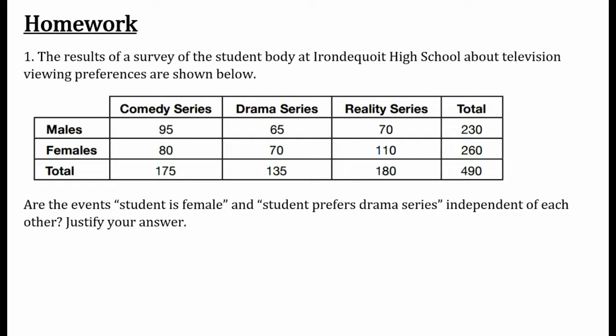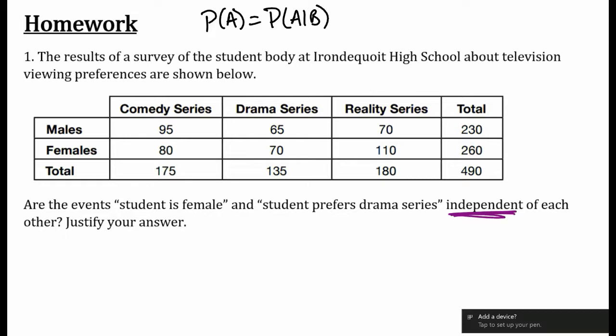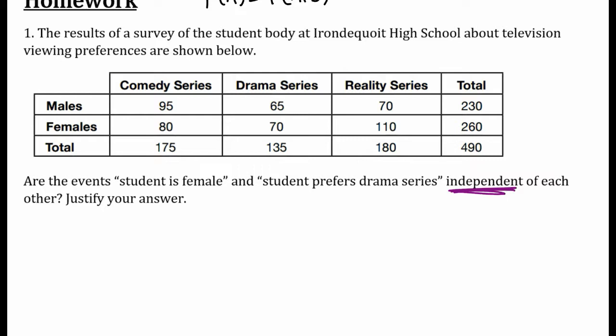This lesson was all about independence. Independence means knowing that you're female doesn't affect your TV preference, or knowing your TV preference will not affect knowing what gender you are. We can use conditional probabilities to do this. The big idea for independence: we say two events are independent if the probability of A equals the probability of A given B — meaning knowing B happened does not change the probability of A happening.